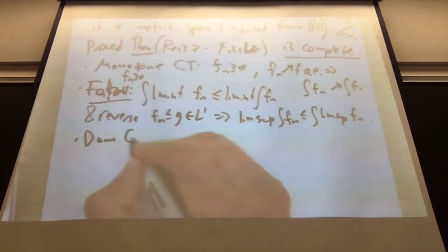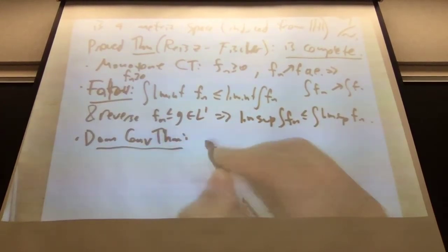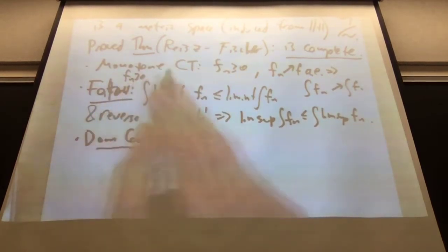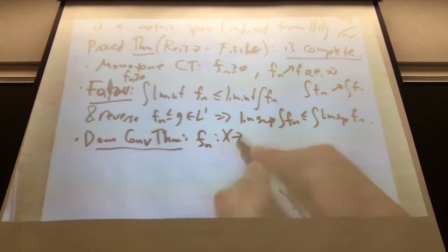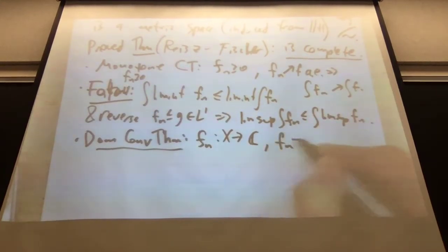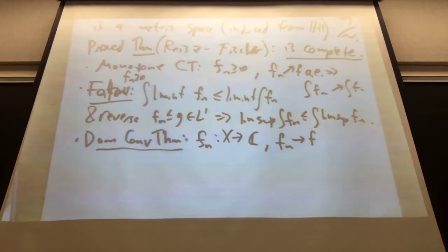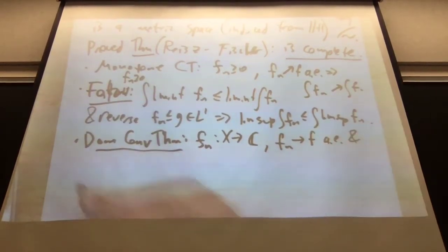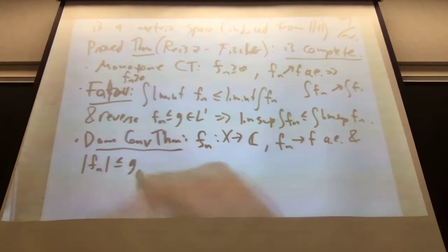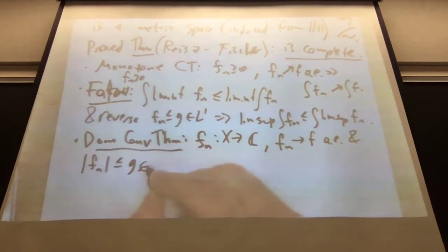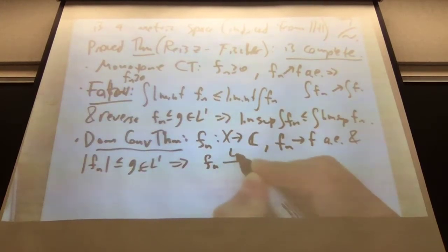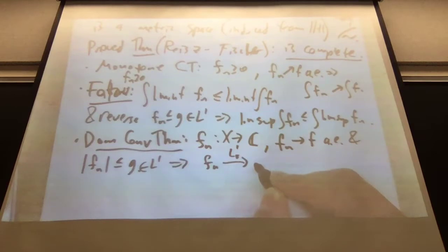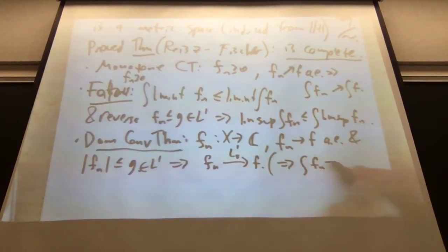The dominated convergence theorem: if the F_n's converge to F — these work for non-negative for monotone convergence and Fatou 2 — dominated convergence is for arbitrary, even complex-valued functions. They converge to F almost everywhere. If the absolute values of the F_n's are bounded by some auxiliary G in L1, then not only do the integrals of the F_n's converge to the integral of F, but the F_n's themselves converge in L1 to F.